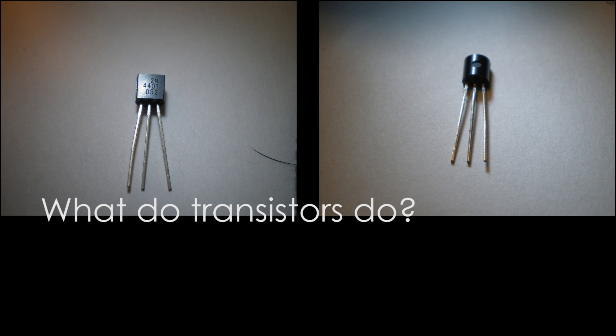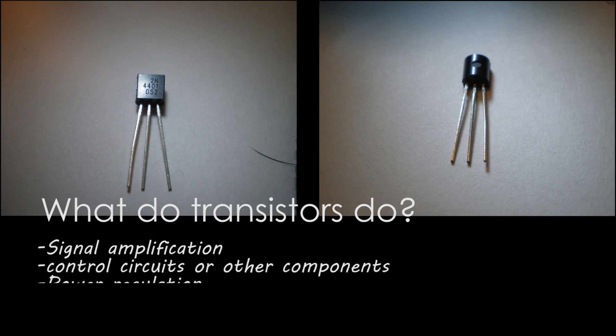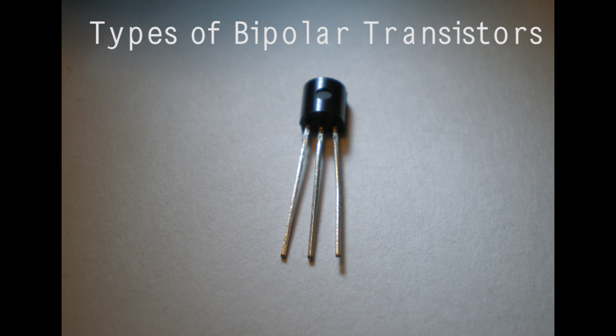Transistors can be used to amplify analog signals. They can be used to control bigger components with small signal voltages from, say, a microcontroller, or for voltage regulation applications, or just switching components or circuits on and off.